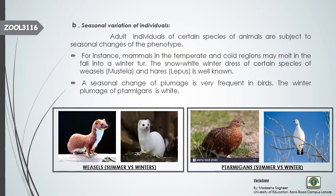The second type of individual variation in time is the seasonal variation of individuals. Adult individuals of certain species are subject to seasonal changes in phenotype. For instance, certain mammals living in cold regions molt their skin in summer. For example, weasels shed their skin in summer and change their color with the season.